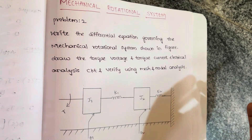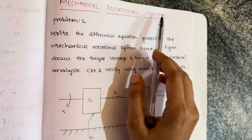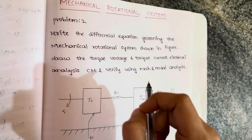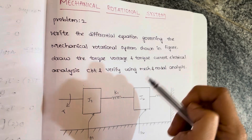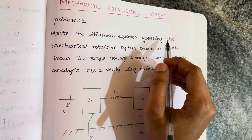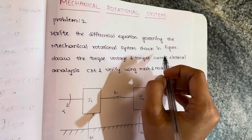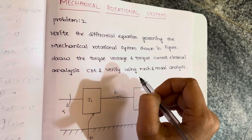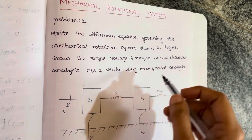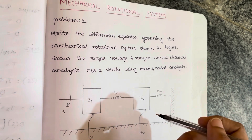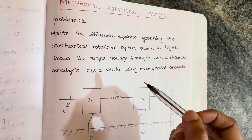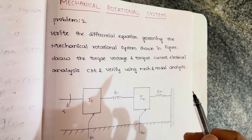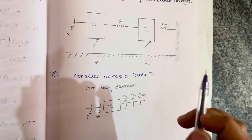Hello friends, welcome to Good Plum. Today we are going to solve problem 2 on mechanical rotational systems. This problem is different from the previous problem — previously we had to find the transfer function, but here we are asked to write the differential equation governing the mechanical rotational system shown in the figure, draw the torque-voltage and torque-current electrical analogies, and verify using mesh and nodal analysis.